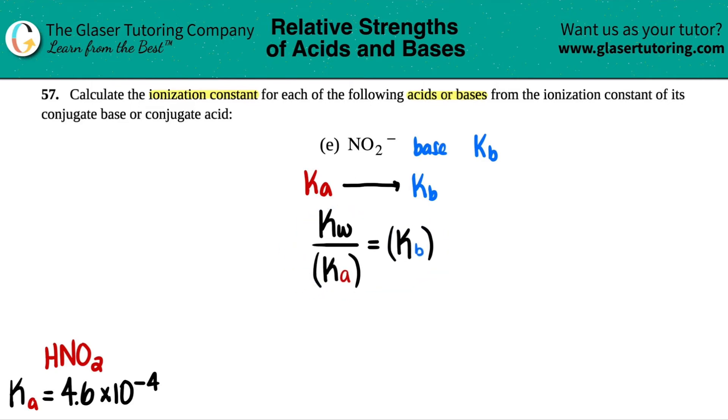So we know what the Ka value was. That was the one that we found in the back of the chapter or the back of the textbook, 4.6 times 10 to the negative fourth. And if it's in the back of a chapter or textbook, the Kw value is also at room temp. You probably have to memorize this one. 1.0 times 10 to the negative 14th. So let's do the math. Something divided by something equals Kb.